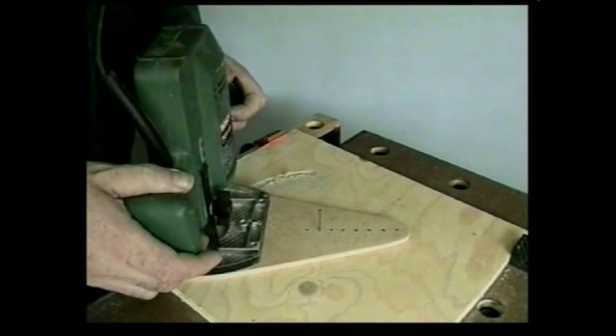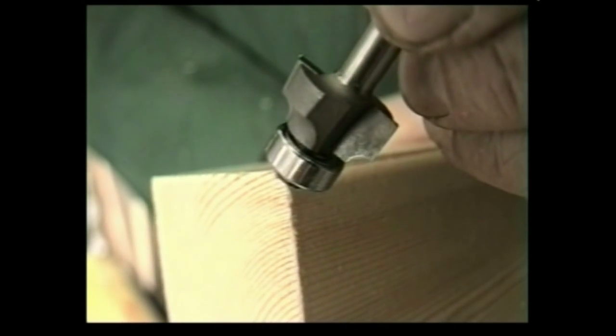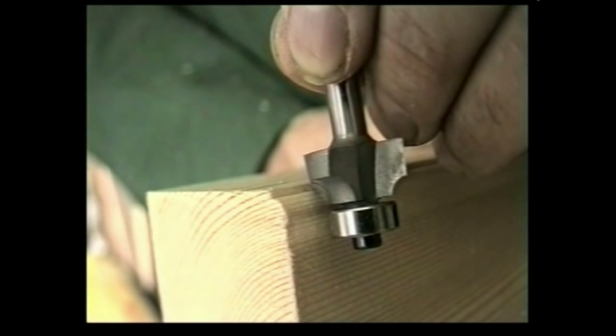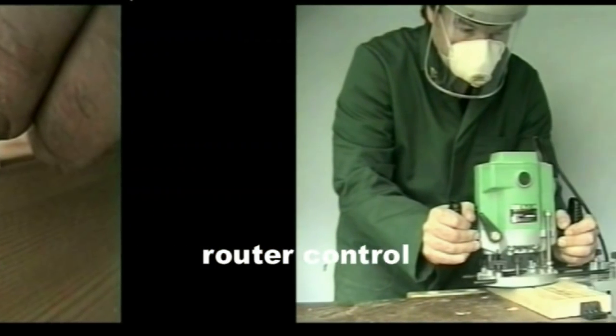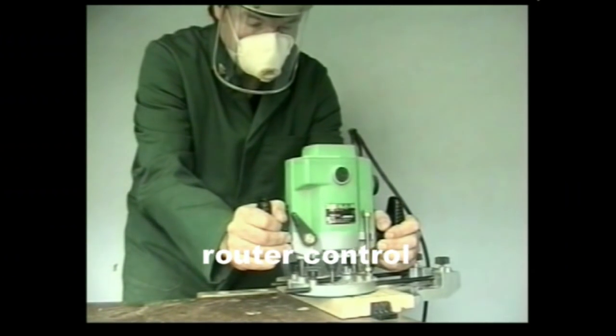Now the cutter can also be part of a jig as these bearing guided cutters rely on a tiny ball race. Always move the router to and from you, never from side to side.